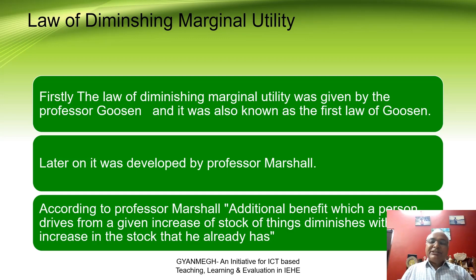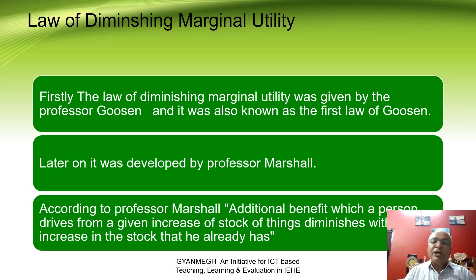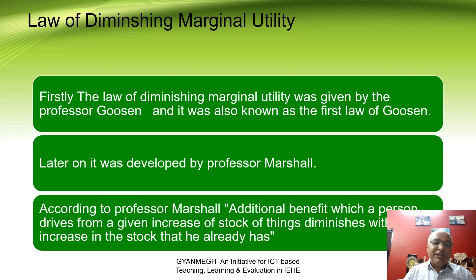Firstly, it was given by Gossen, that is why it is known as the first Law of Gossen. Later on it was developed by Professor Marshall. Marshall said that the additional benefit which a person derives from a given increase of stock of things diminishes with the increase in the stock that he already has.